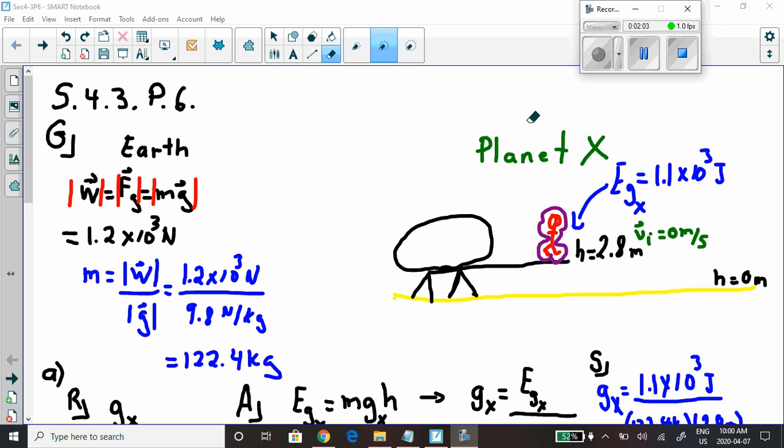So next, we're on Planet X and here is the space capsule. Notice how artistic I am. There's this capsule and here is the astronaut with a purple astronaut space suit. We're told that the astronaut is on some type of ledge here on the space capsule, which is 2.8 meters above the surface of Planet X. So here the height is 2.8 meters.